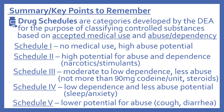Now for our summary and some key points to remember. Drug schedules are categories developed by the DEA for classifying controlled substances based on accepted medical use and abuse or dependency potential. Schedule one drugs have no medical use and a high abuse potential. Schedule two drugs have a high potential for abuse and dependence — generally think of these as narcotics and stimulants. Schedule three drugs have moderate to low dependence and less abuse — remember these include not more than 90 milligrams of codeine per unit and anabolic steroids such as testosterone. Schedule four drugs have low dependence and less abuse potential — generally think of these as sleep and anxiety medications. And schedule five drugs have a lower potential for abuse — generally cough medications and medications for diarrhea.